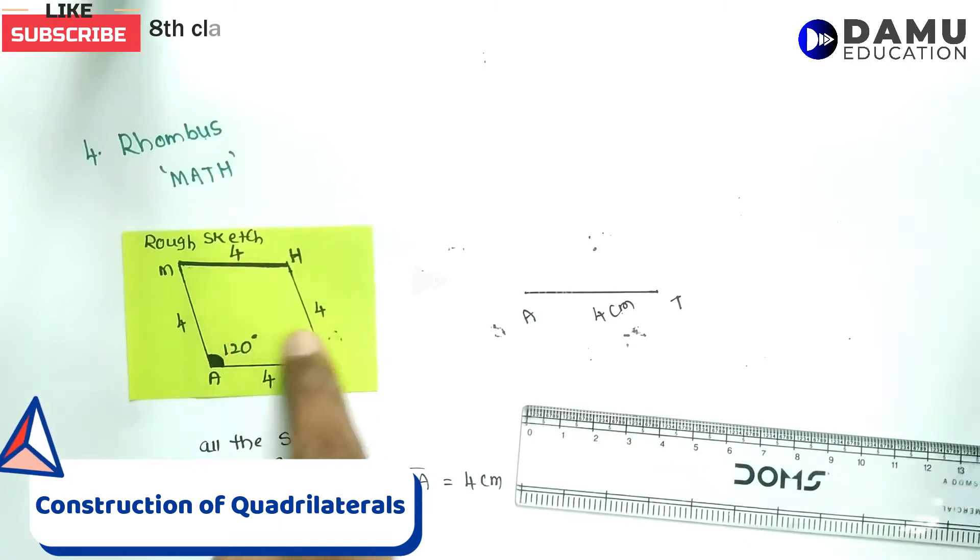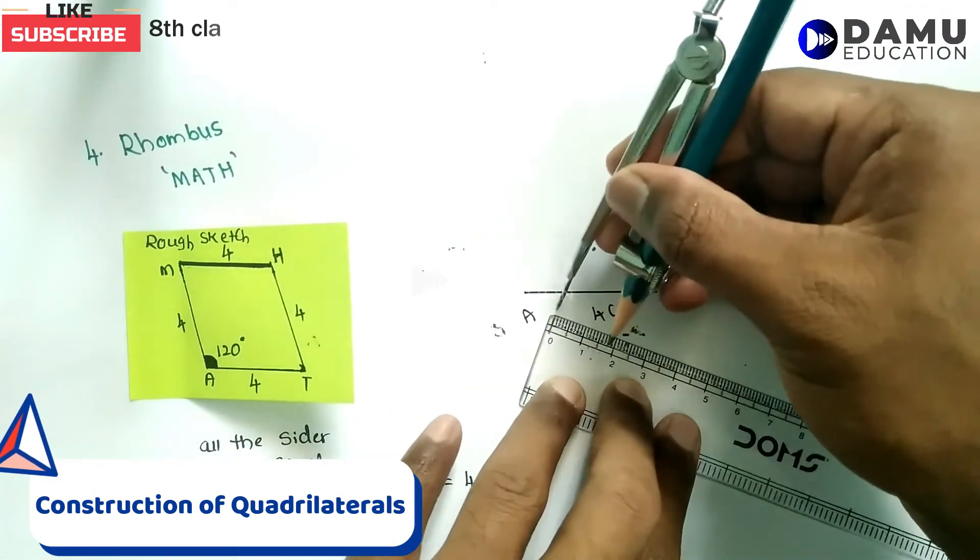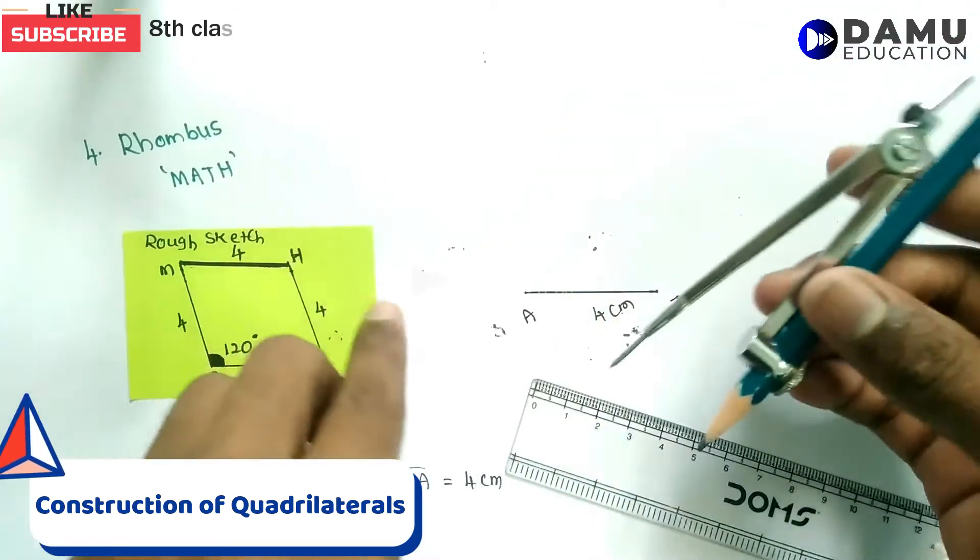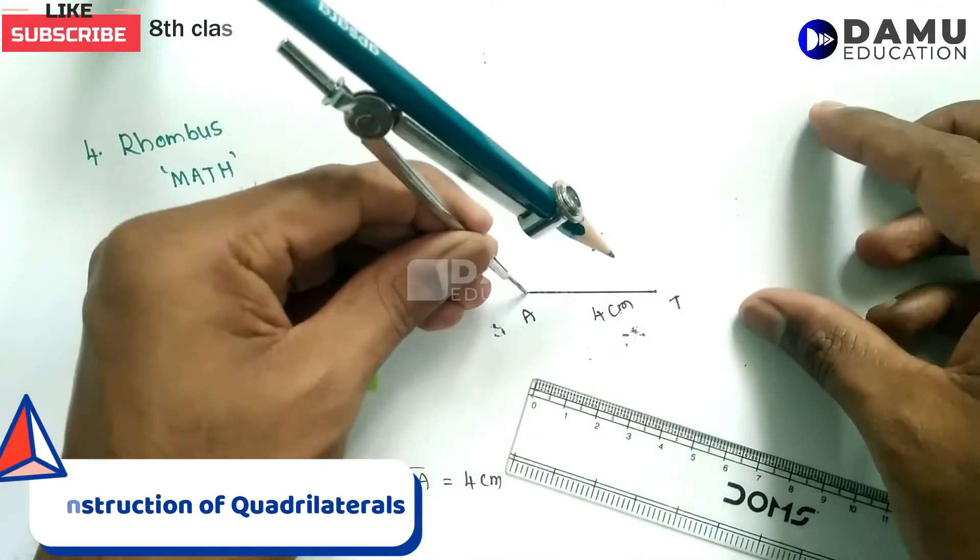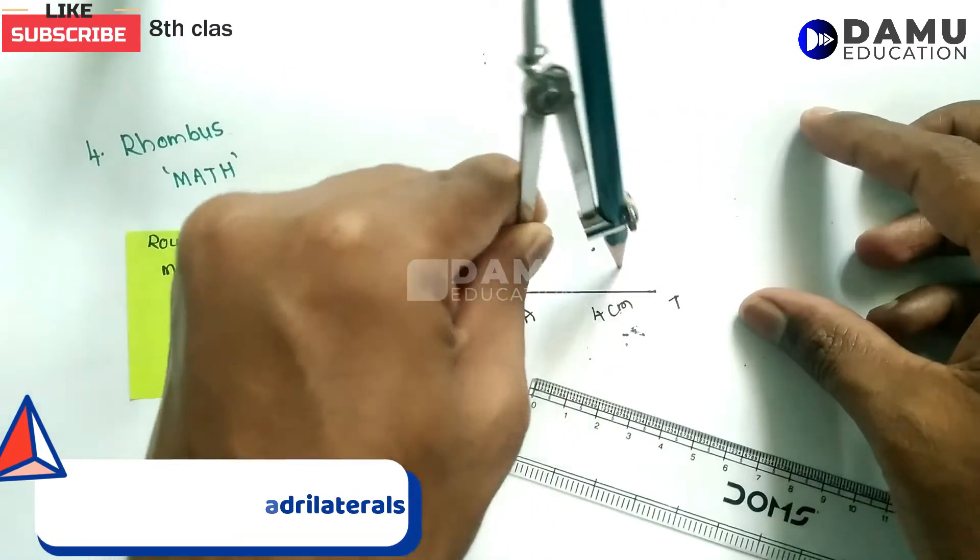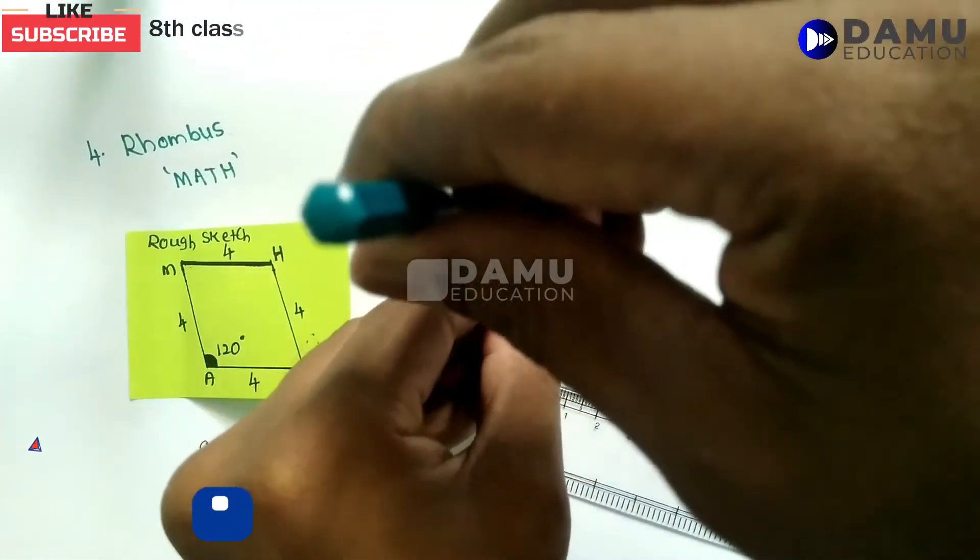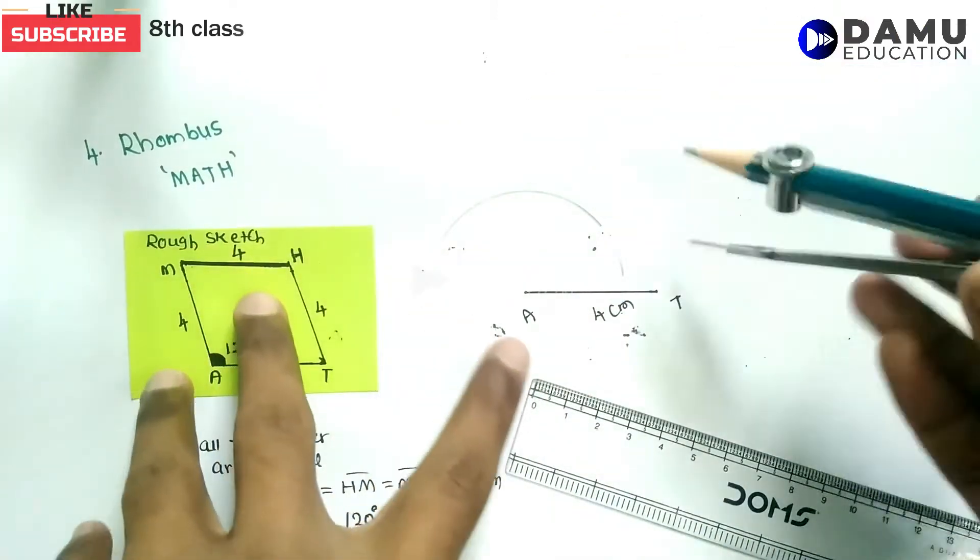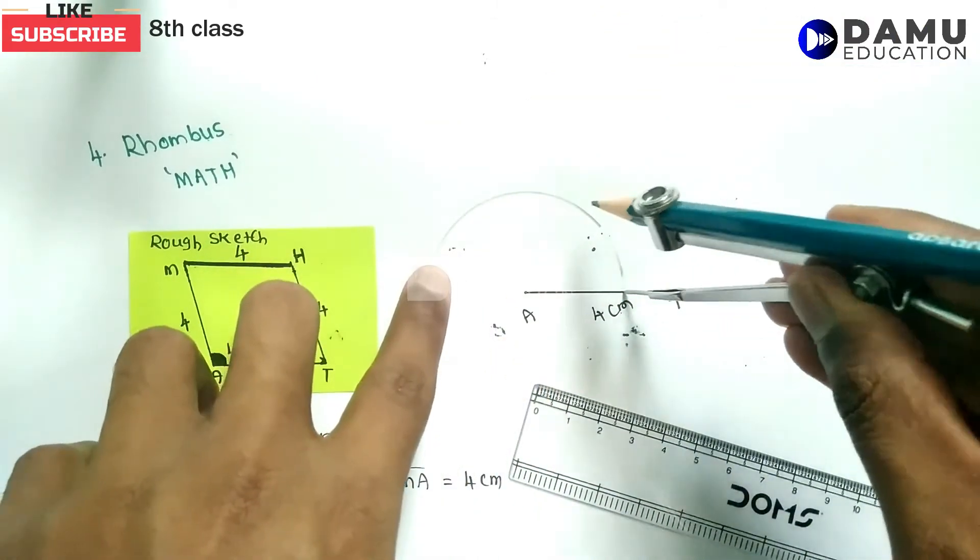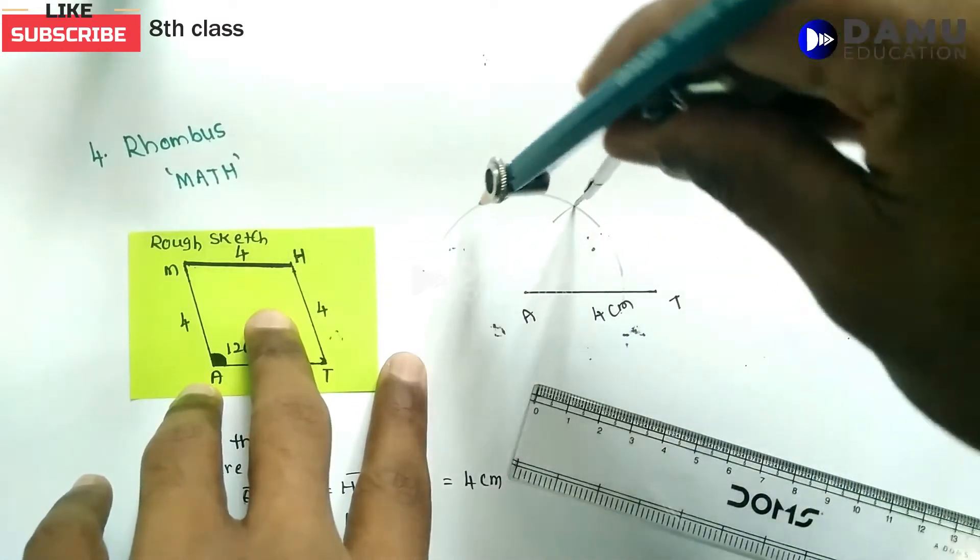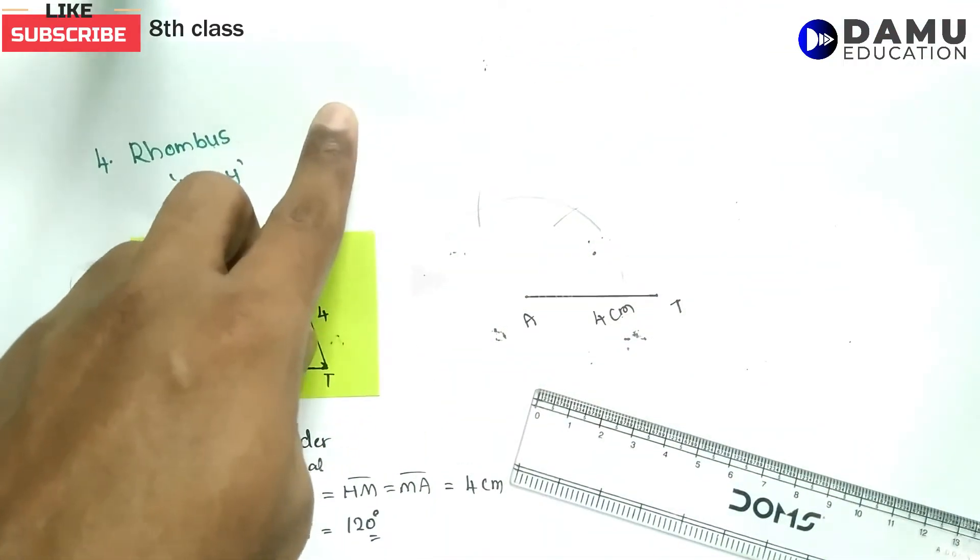Now draw a 120-degree angle without a protractor. How? Take around 3 cm radius. From A, draw one arc. Then from this point, draw another arc. Without changing the compass length, this creates a 60-degree angle, and extending gives us 120 degrees.